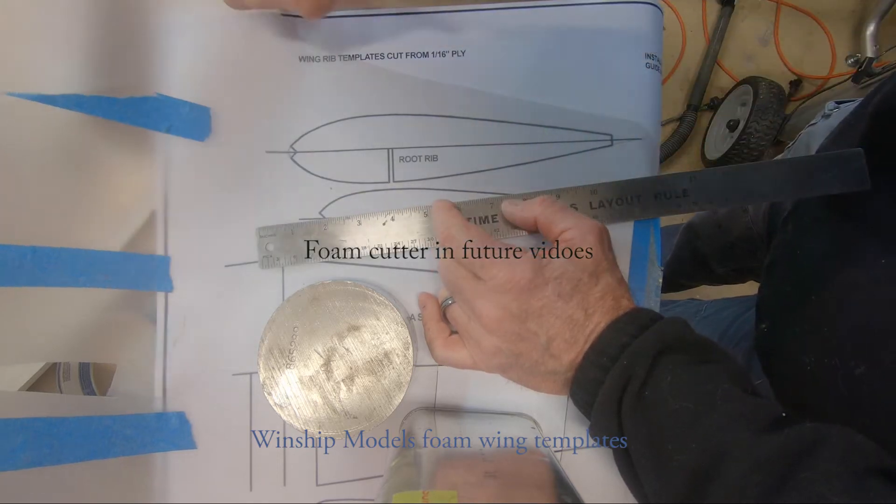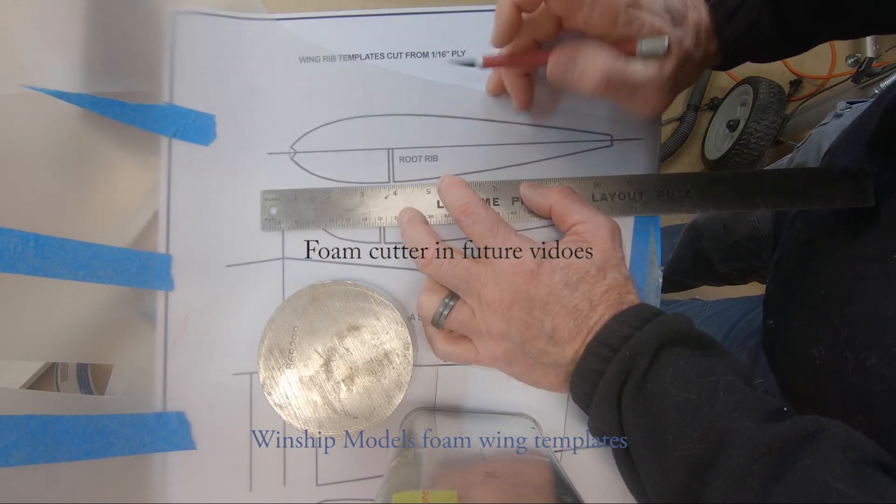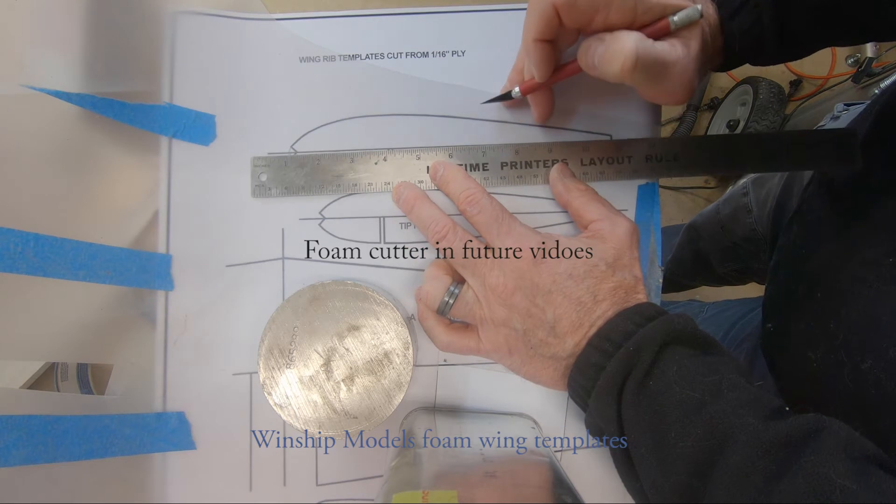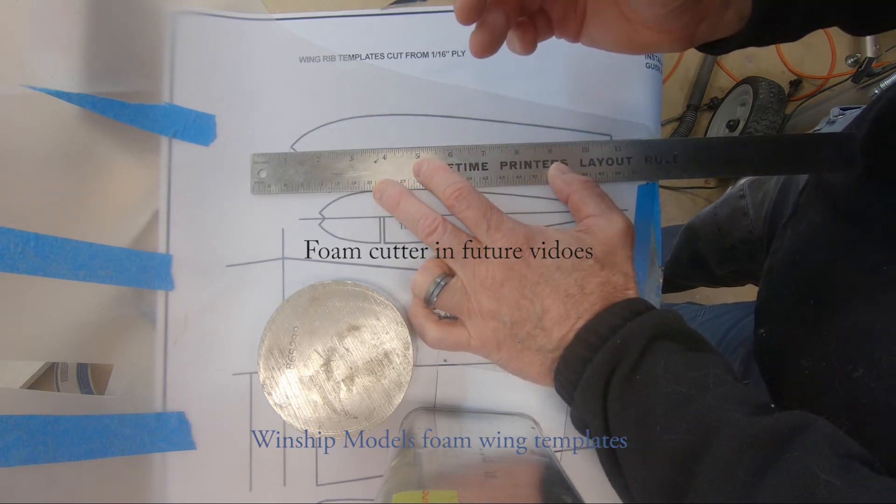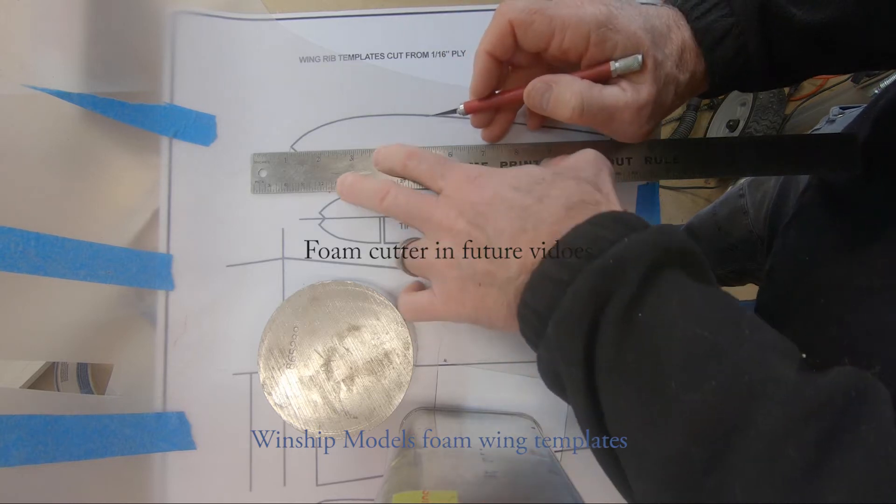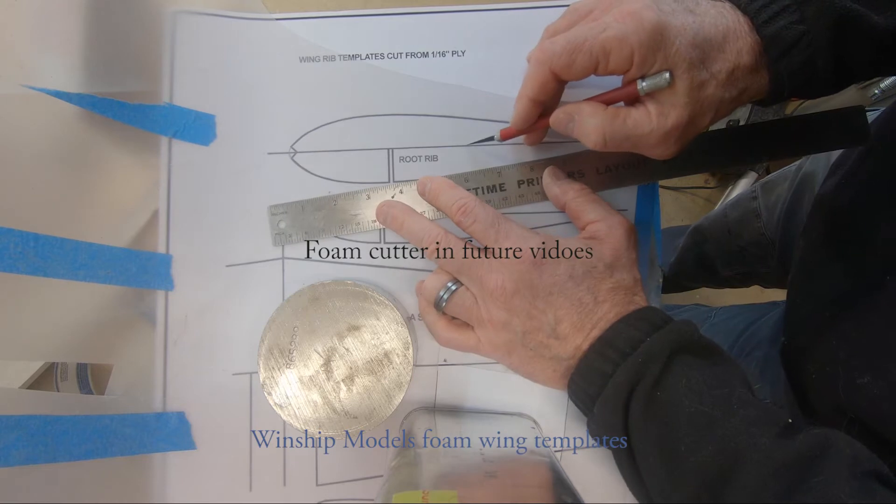And this plastic laying over the top of this plan is C-Temp. And what I've done here, I've made a line, scored a line with this brand new number 11 right down this center line. I've just scored that right here.